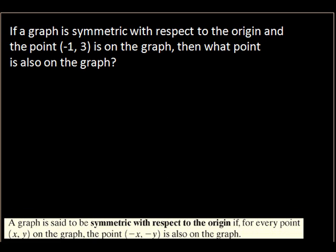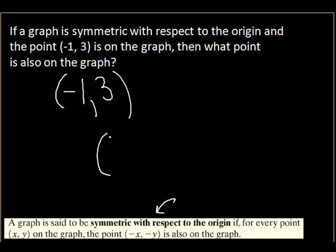If a graph is symmetric with respect to the origin and the point (-1, 3) is on the graph, what point is also on the graph? For origin symmetry, both values change sign. So negative 1 becomes positive 1, and 3 becomes negative 3. The answer is (1, -3).